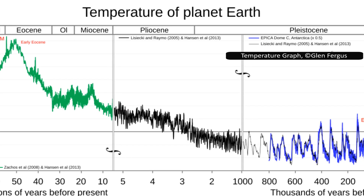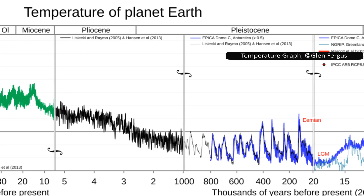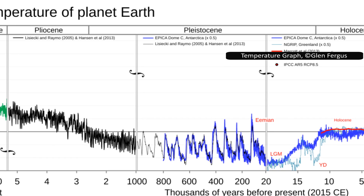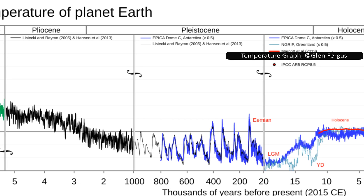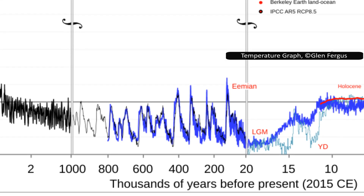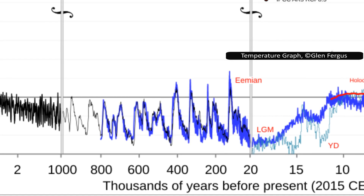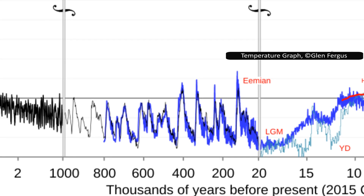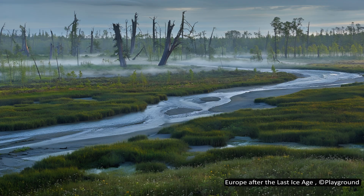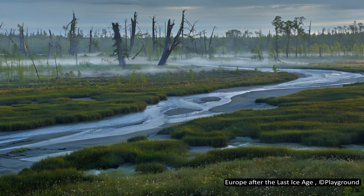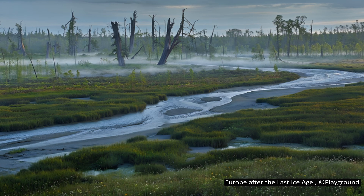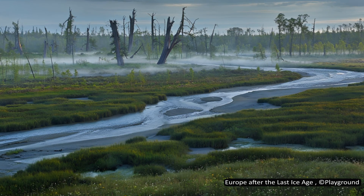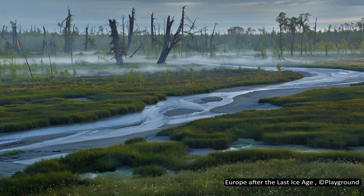When we talk about the Quaternary, we're really talking about a world defined by cycles of ice and warmth. Over the past 2.6 million years, Earth's climate has swung back and forth between long, cold glacial periods and shorter, warmer interglacial times, like the one we're living in now. These weren't gentle shifts. Entire ice sheets grew to cover much of North America, Europe, and Asia, then melted away, sometimes within a few thousand years.